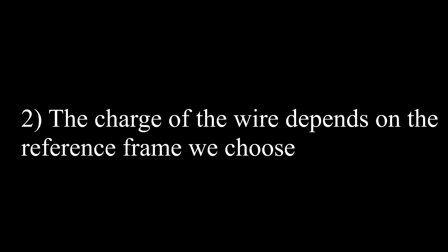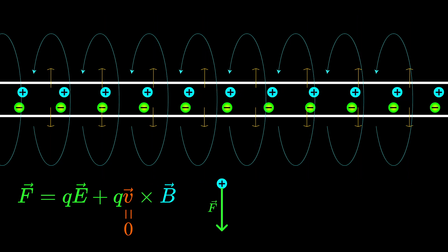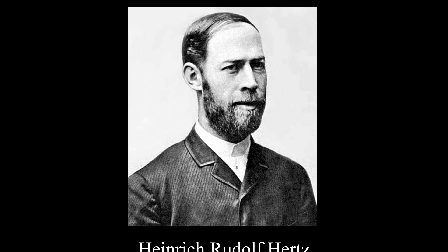The second possible resolution is that the charge density of the wire depends on the reference frame of the observer. This would mean the electric part of the Lorentz force is not zero and would produce a force on the particle. There is perhaps a third option — that Maxwell's equations are simply wrong. But a series of experiments throughout history were all in accord with Maxwell's equations, so that option seems unlikely.